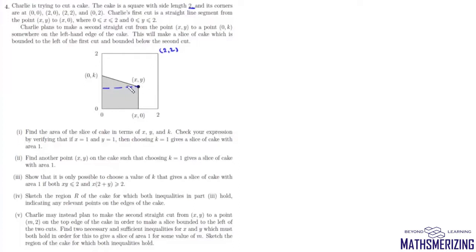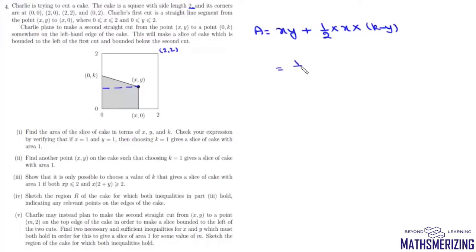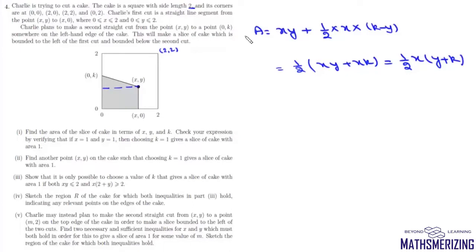We divide the area into two parts: the area of a rectangle and the area of a triangle. The rectangle has area x times y, and the triangle has area (1/2) times base x times height (k minus y). Taking (1/2) common gives (2xy + xk − xy), which simplifies to xy + xk, or equivalently (1/2)x(y + k). That's the answer to the first part.